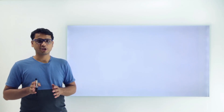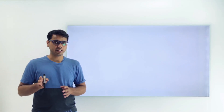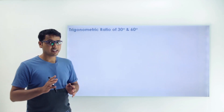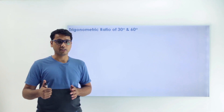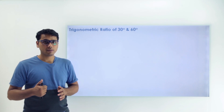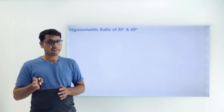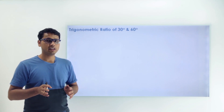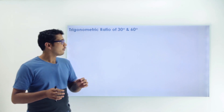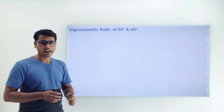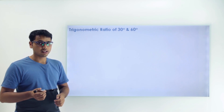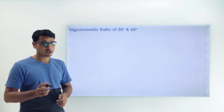Since we had learned the trigonometric ratios for angle 45 degrees, now we'll learn the trigonometric ratios for 30 degrees and 60 degrees. Just recall that for angle 45 we had taken an isosceles triangle, because the 45 degree angle can easily be seen in an isosceles triangle. Now we need to look for 60 degrees and 30 degrees, and we can take an equilateral triangle.